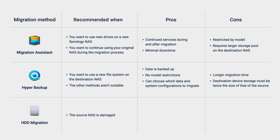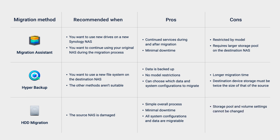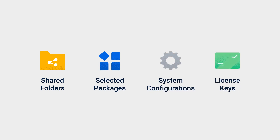Use HDD Migration if your source NAS is damaged and you want to replace it. The instructions for this method may vary product to product. The process is simple, you'll experience less downtime, and you can migrate all of your data and system configurations on recommended model pairings. The downsides are that you cannot change the storage pool or volume settings, and there are restrictions on which drives and NAS models can be used. If HDD Migration is not recommended for your source and destination NAS models, we recommend you use Hyper Backup instead. Although migration helps you keep your data, we strongly recommend backing up before continuing.